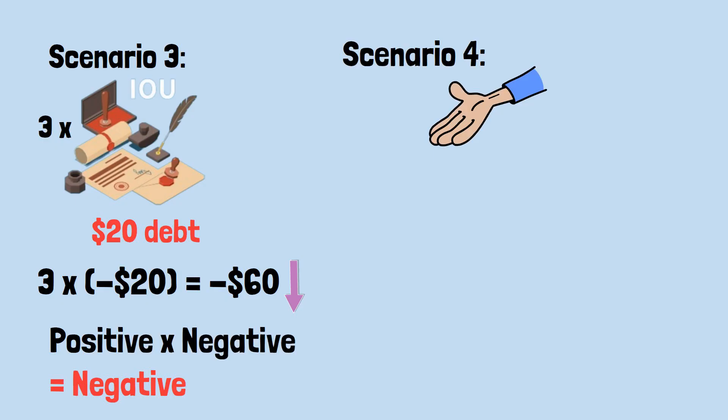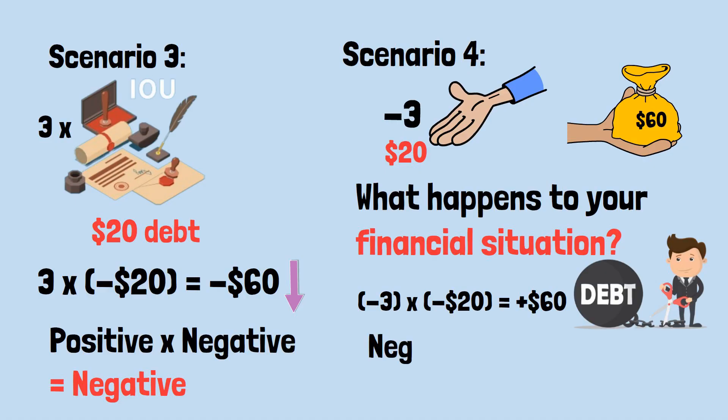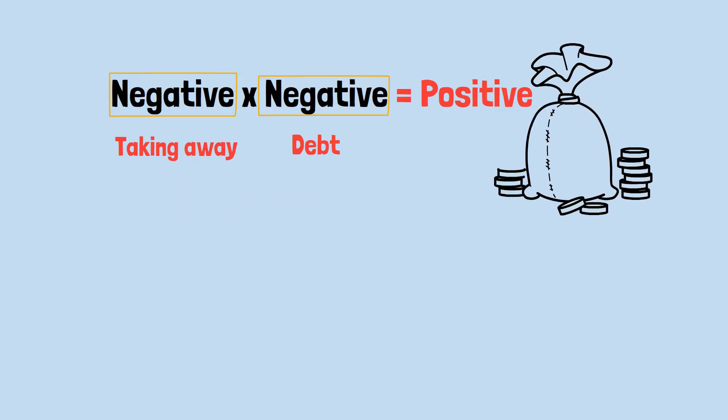Scenario 4. I take away three of your $20 debts. Think about this carefully. If you owed three debts of $20 each, and I eliminate those debts for you, what happens to your financial situation? You become $60 richer. Taking away debt is equivalent to giving you money. Mathematical representation: (-3) × (-$20) = positive $60. This represents negative × negative = positive. The key insight is that the first negative sign represents the action of taking away. The second negative sign represents debt, something that reduces your wealth. When you take away something that reduces your wealth, you increase your wealth.